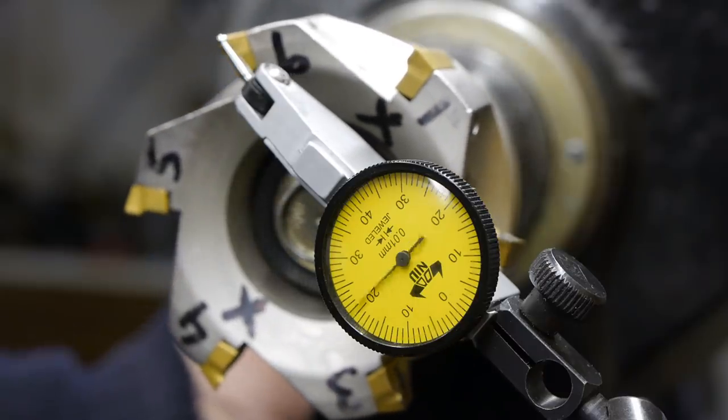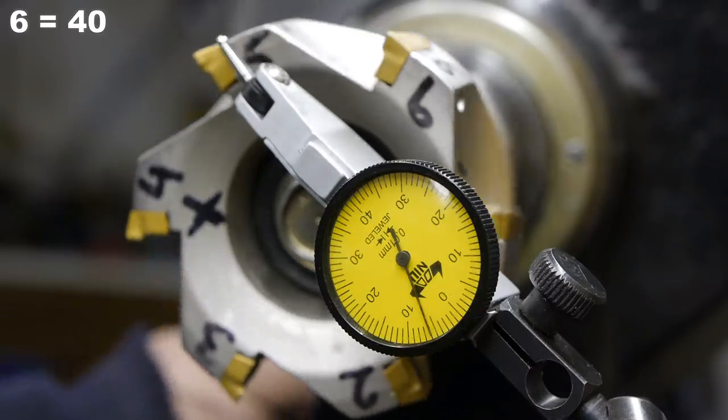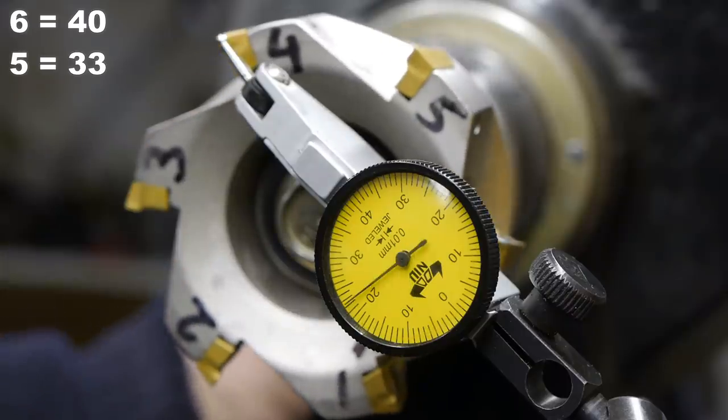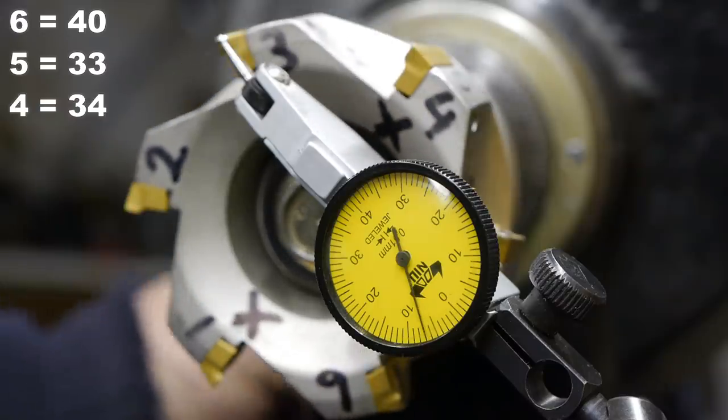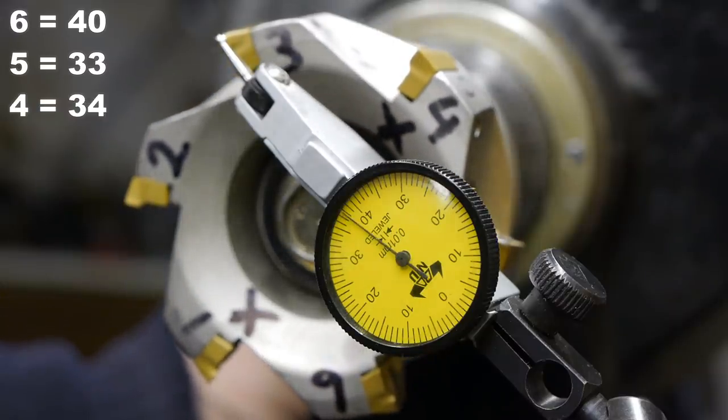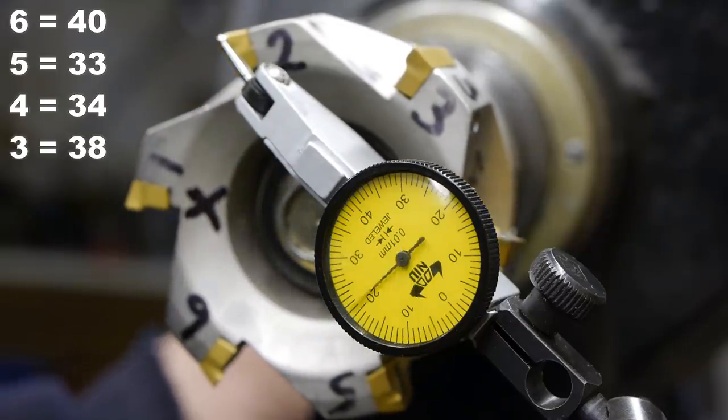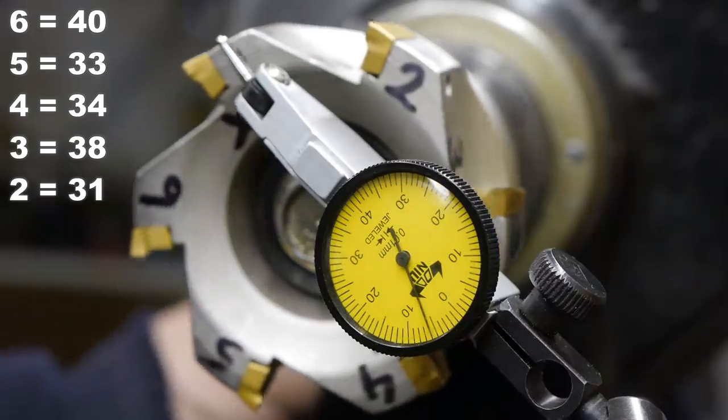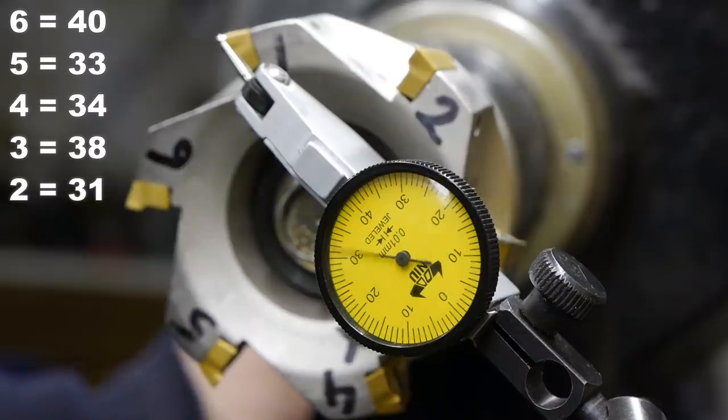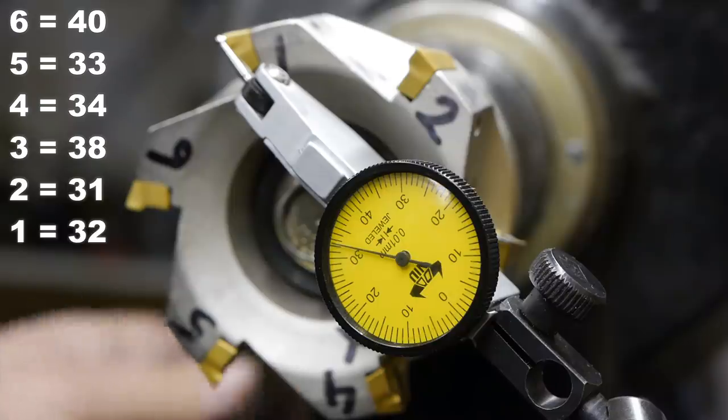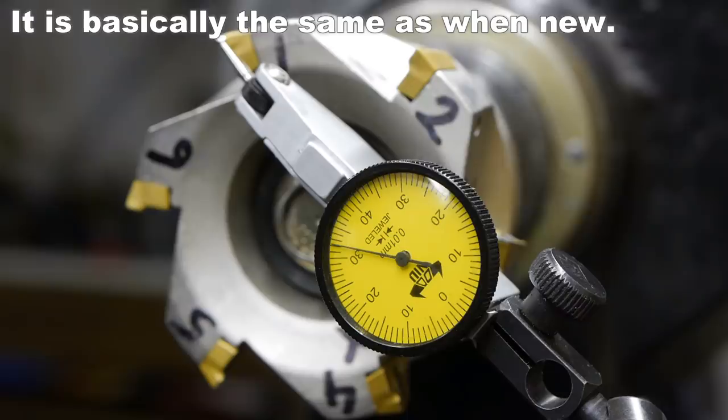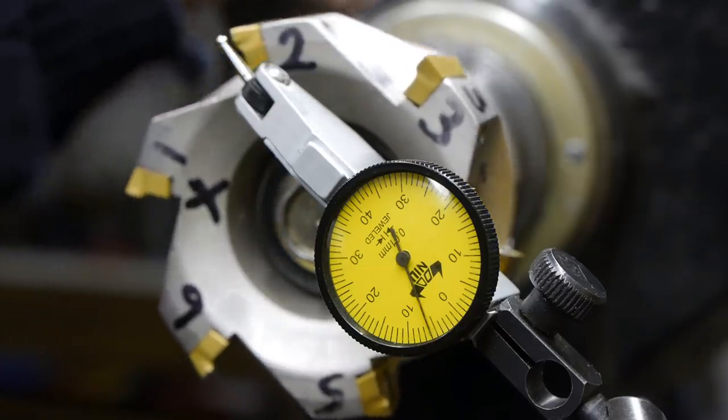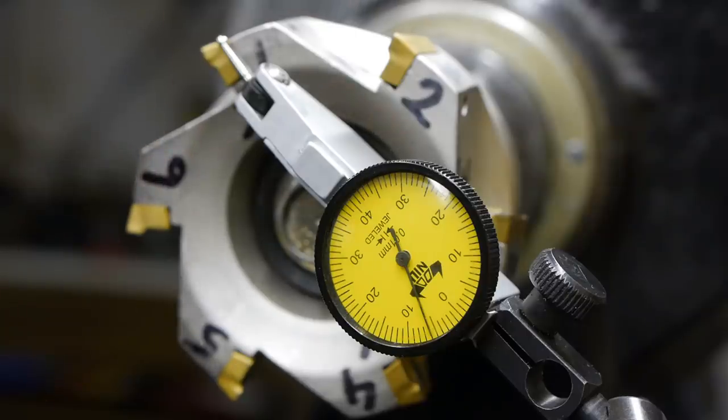A little bit more than 40. Number five, 33. Four, 34. Three, 38. Two, bit more than 31. And number one, that's about 32, a bit more. Okay, so the delta is about the same, maybe slightly more. I think insert two and five are almost on the same height. So let's take out the other inserts and try it with only two inserts.